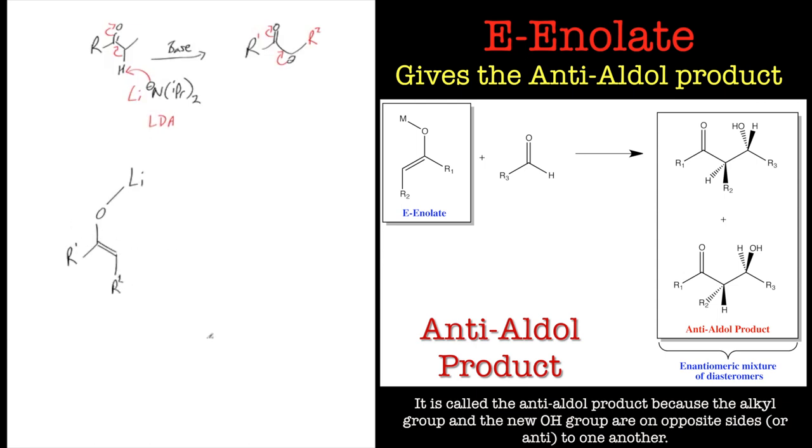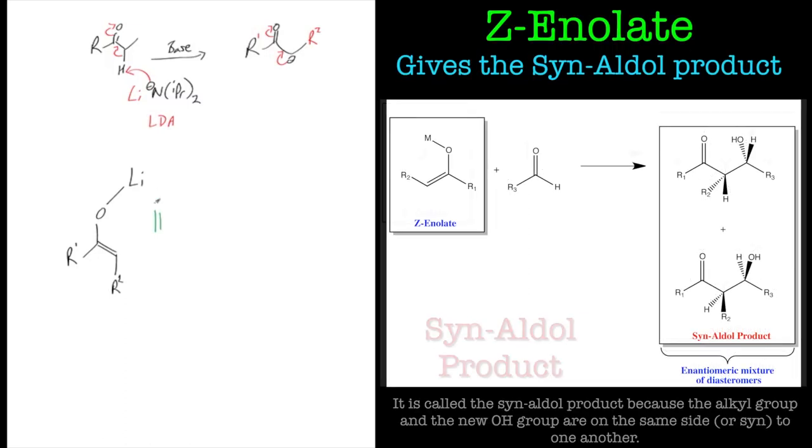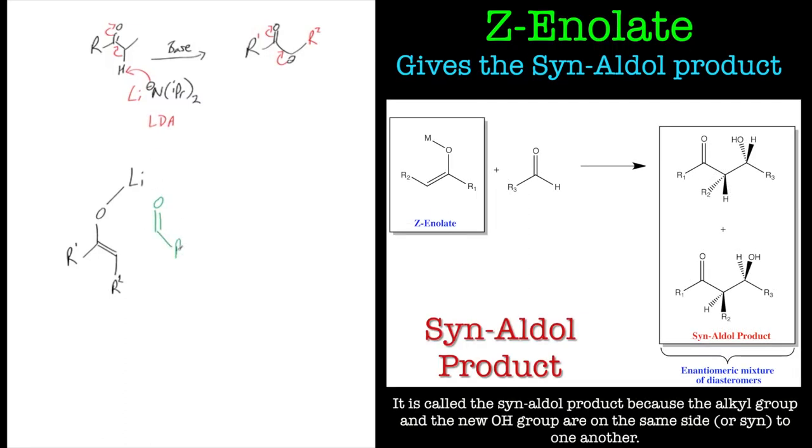Now they will lead to different products. So if we draw the transition state out, we'll draw it out flat to start with and I'll just put the aldehyde in there. I'll put the hydrogen in to start with but I'll just get rid of that just to clarify the diagram.